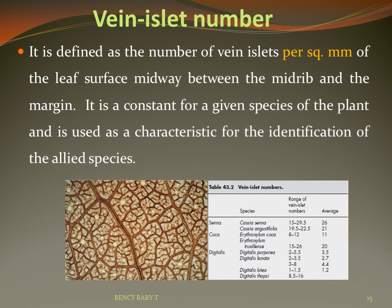Vein islet number is defined as the number of vein islets per square millimeter of the leaf surface midway between the midrib and the margin. It is constant for a given species and is used as a characteristic for identification of allied species. For example, Cassia senna (cassia angustifolia) has a vein islet number of 21, and Digitalis purpurea has 3.5.